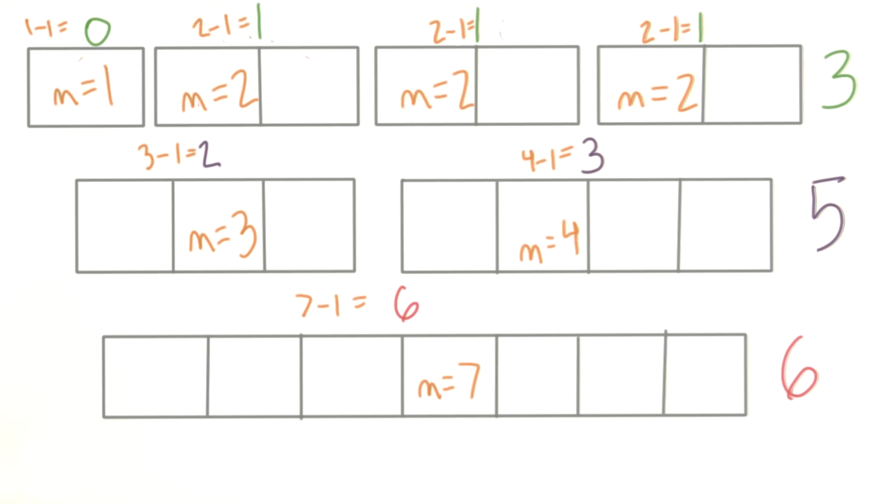I'm going to go ahead and call the length of each array m, just to make it a little easier for me. So if m is the size of the array that we're building, the number of comparisons is always going to be one less than that.